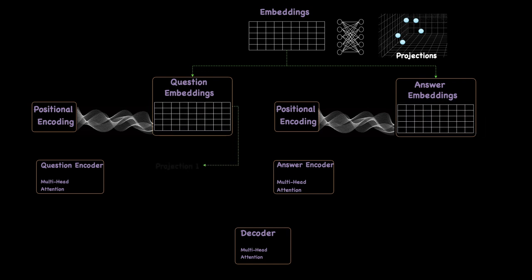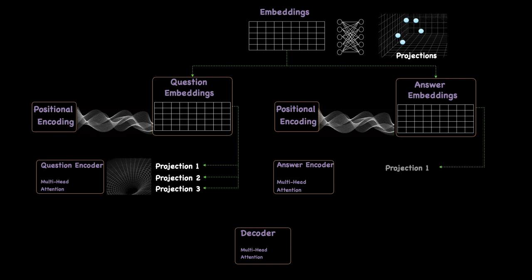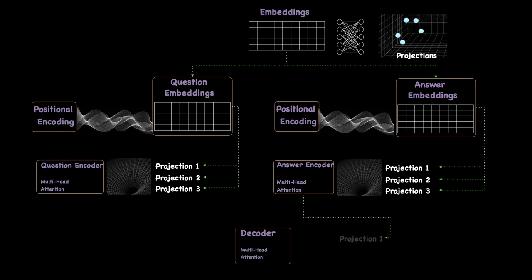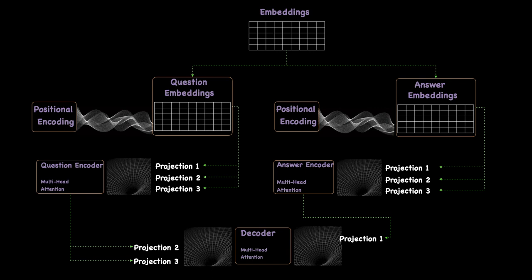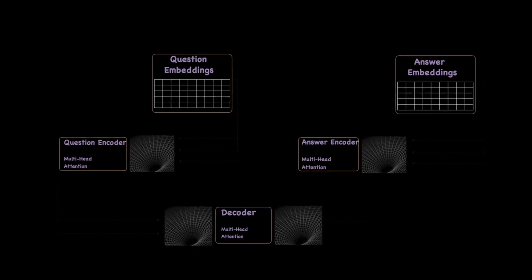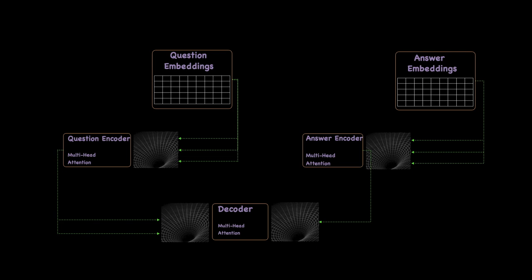The question embeddings provide input to the question encoder, where it creates three projections. The answer embeddings provide input to the answer encoder, where it also creates three projections. The output of the answer encoder provides input to the decoder, where it creates one projection. The output of the question encoder also provides input to the decoder, where it creates two projections. Essentially, the encoder gets its input from the embeddings, whereas the decoder gets its input from the encoders.